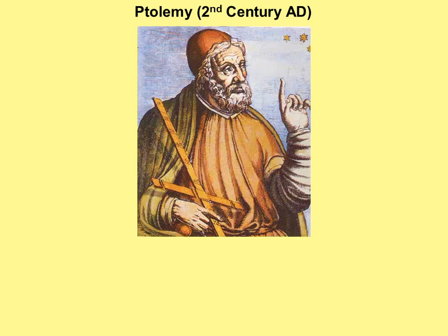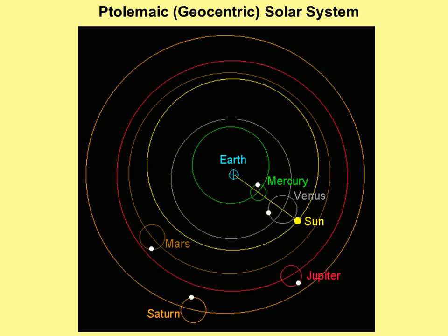Ptolemy was another ancient Greek, though not so ancient, 2nd century AD. We don't have good dates for when he was born and died. He worked mostly in Alexandria in ancient Egypt. The Ptolemaic, or geocentric, solar system is the one you've probably seen with Earth at the center, and everything moves around the Earth, including the Sun. It does kind of look that way. You look outside, Sun rises in the east and sets in the west, looks like it's moving around the Earth.